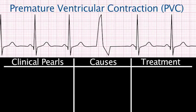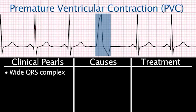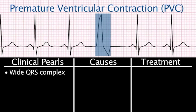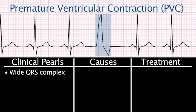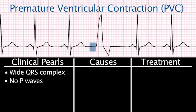The premature ventricular contraction occurs when the QRS complex is different looking from the sinus QRS complex — it is abnormal and wide. It occurs before the next expected QRS complex in a regular rhythm. The electrical impulse starts in the ventricle and not in the SA node. There is no P wave before the premature QRS complex.